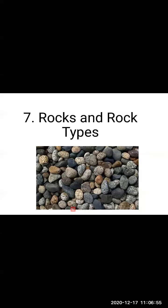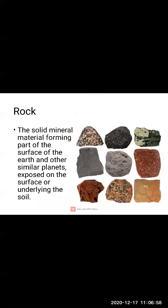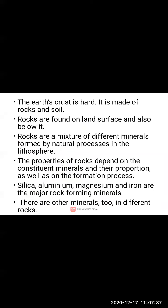Now, what is a rock? It is a solid mineral material forming part of the surface of the earth and other similar planets, which are exposed on the surface or underlying the soil. This is the definition of rock. It is a solid material — not in liquid state, it is in solid state — and it is part of the surface of the earth, or underlying the soil.